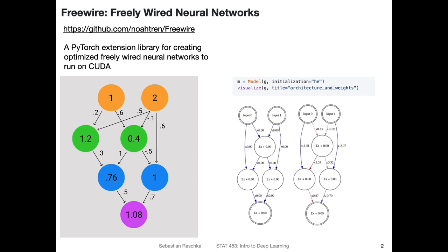Let's start with a fun library I saw this week called Freely Wired Neural Networks. This is a PyTorch extension library for creating optimized freely wired neural networks to run on CUDA — the GPU essentially. You have seen already in the lecture how multi-layer perceptrons work — fully connected layers, where each unit in one layer is connected to every unit in the following layer. We will discuss that in more detail next week in the course.